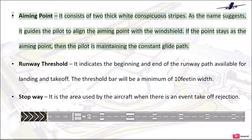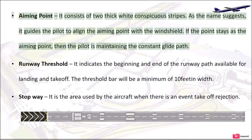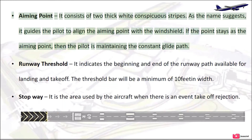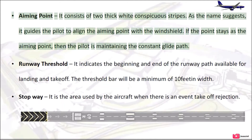Aiming Point: It consists of two thick white conspicuous stripes. As the name suggests, it guides the pilot to align the aiming point with the windshield. If the point stays as the aiming point, then the pilot is maintaining a constant glide path.